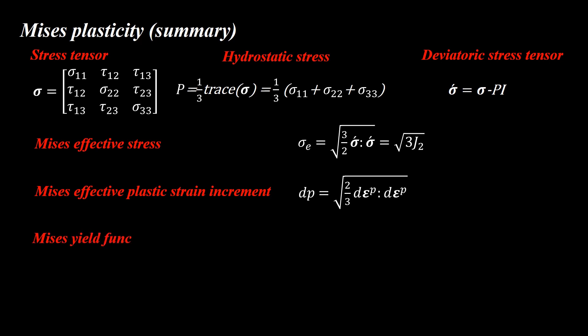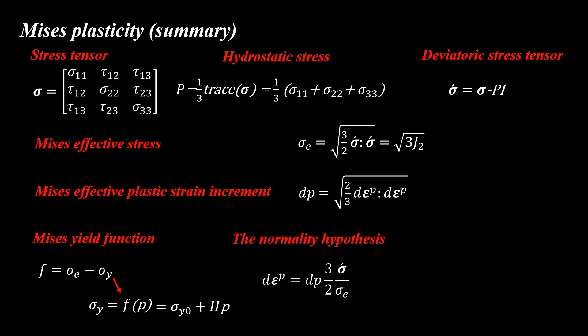The Von Mises yield function is the subtraction of effective stress and flow stress. The flow stress is a function of effective plastic strain. For linear hardening, the flow stress takes a specific form. We use the normality hypothesis to calculate the plastic strain increment direction. As the material is incompressible in plastic deformation, the trace of the plastic strain tensor is zero. For more details, please watch the first video of this playlist.